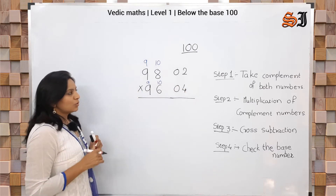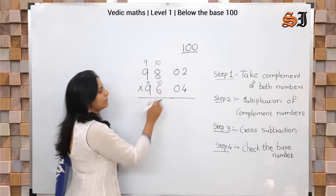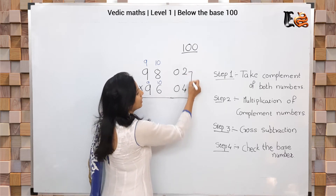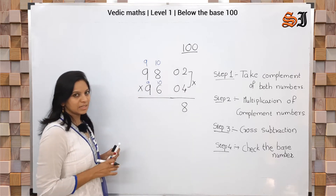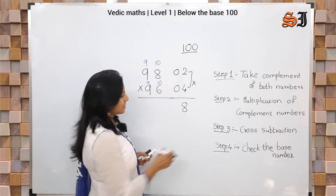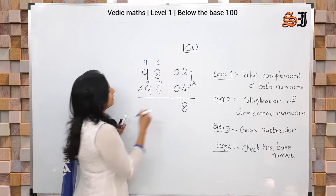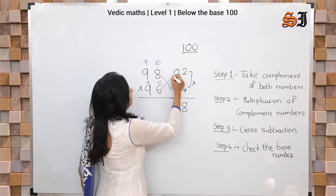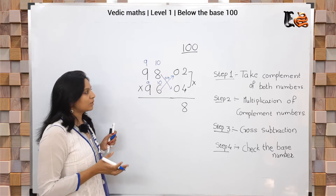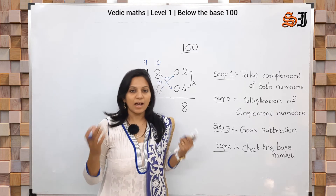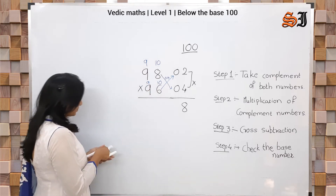Next step: multiplication of the compliment numbers. The two compliments we got — multiply them. So 2 × 4 = 8, and 0 stays as 0. So we get 08. Next, Step 3: Cross subtraction. Take 98 minus 4 (or 96 minus 2) — both give the same answer: 94.